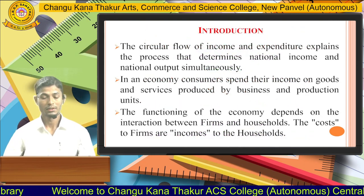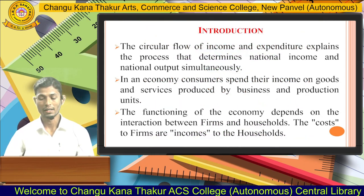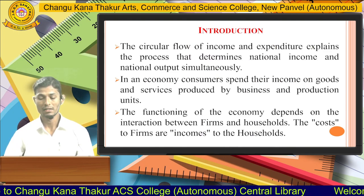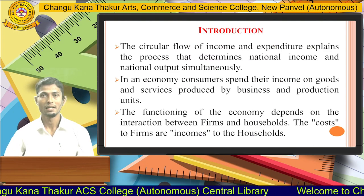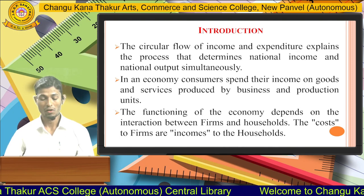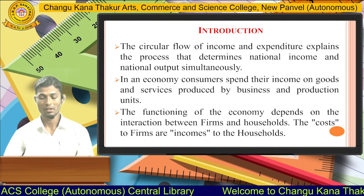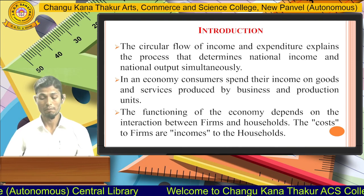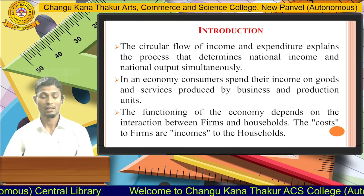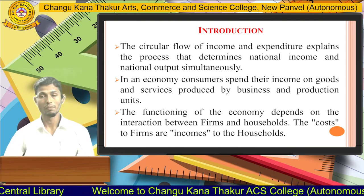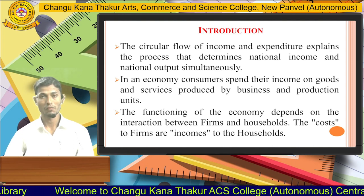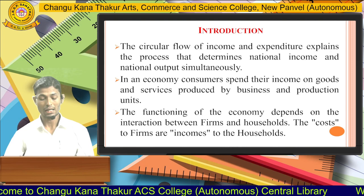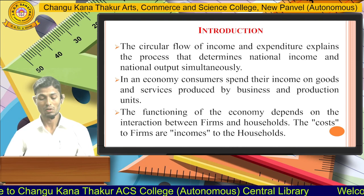The circular flow of income and expenditure explains the process that determines national income and national output simultaneously. In an economy, consumers spend their income on goods and services produced by business and production units. The functioning of the economy depends on the interaction between firms and households.